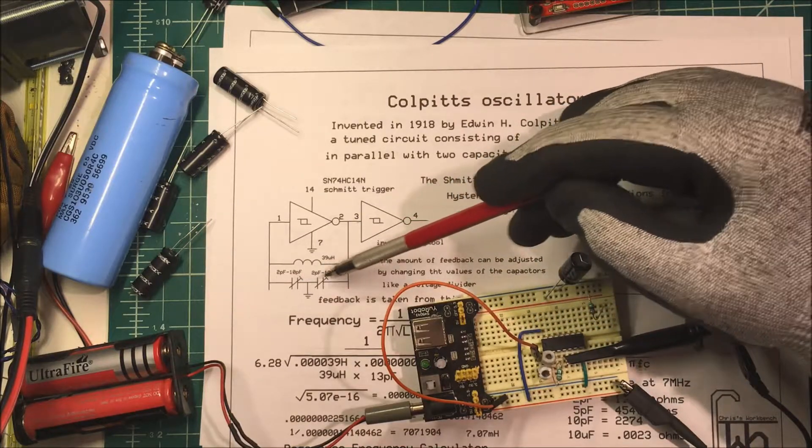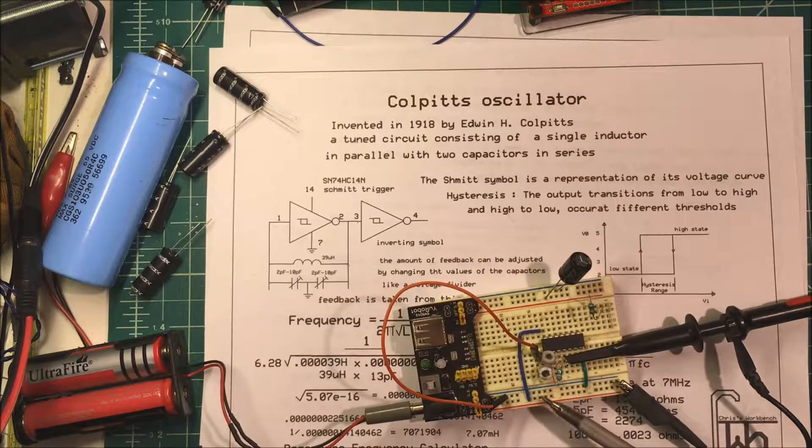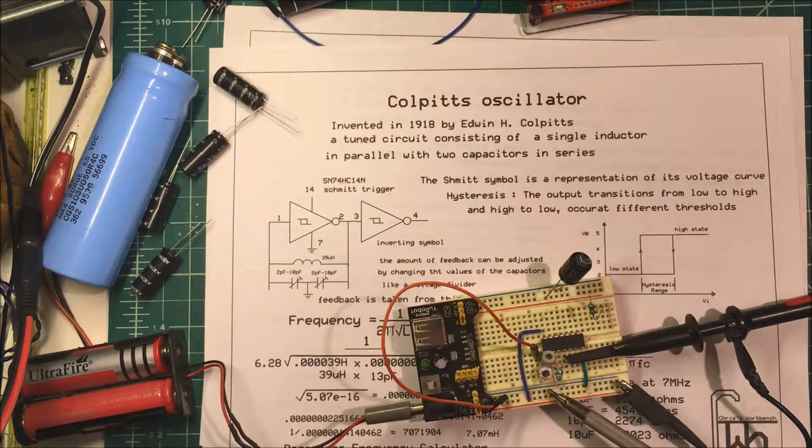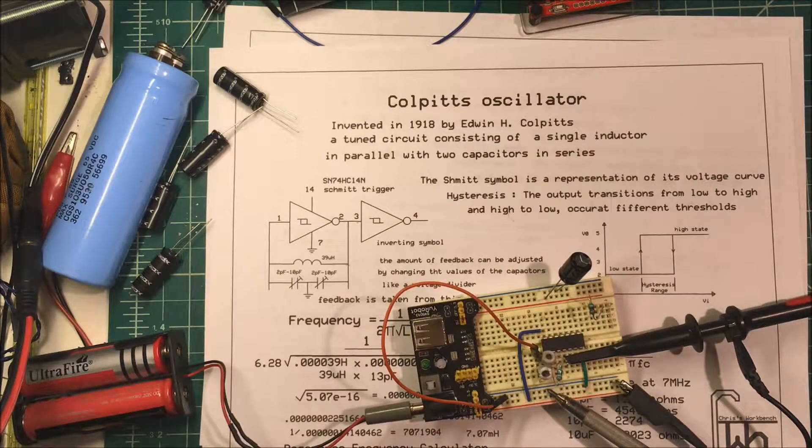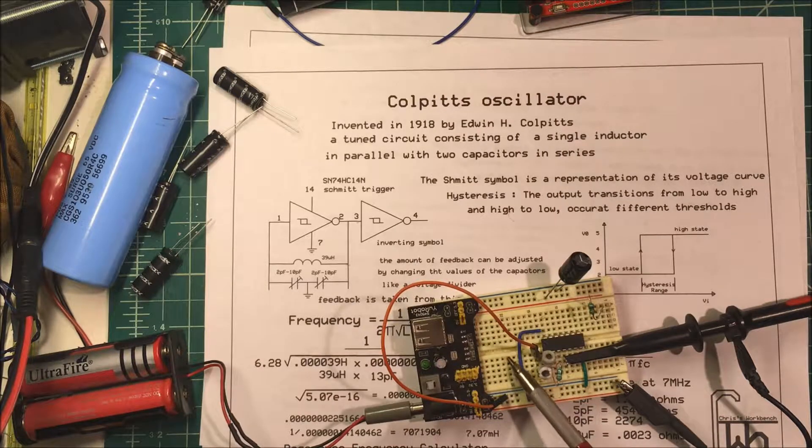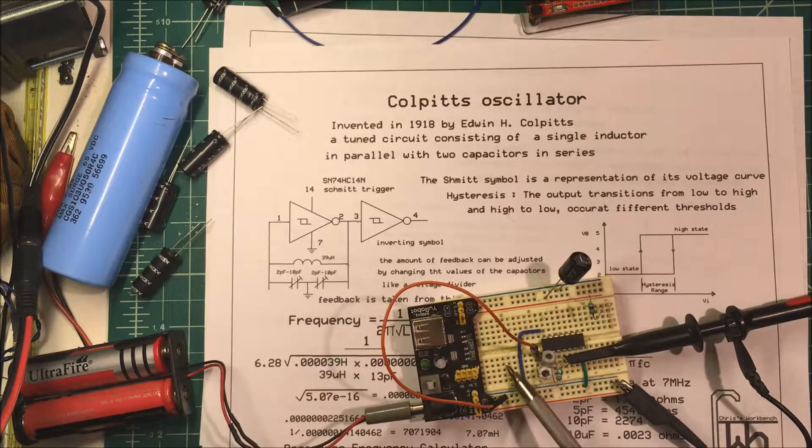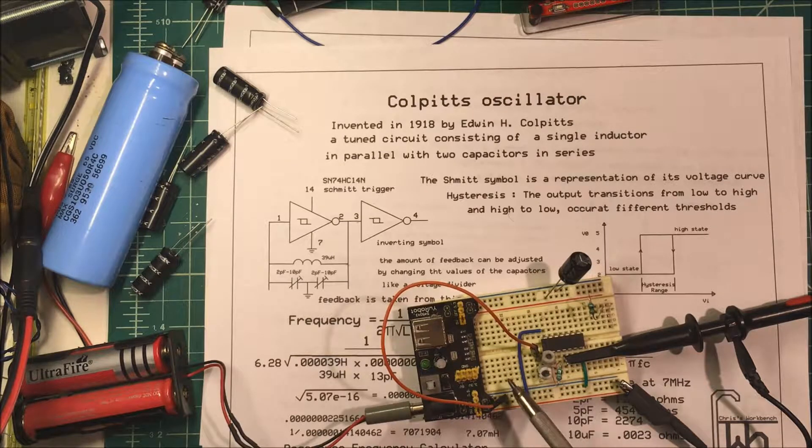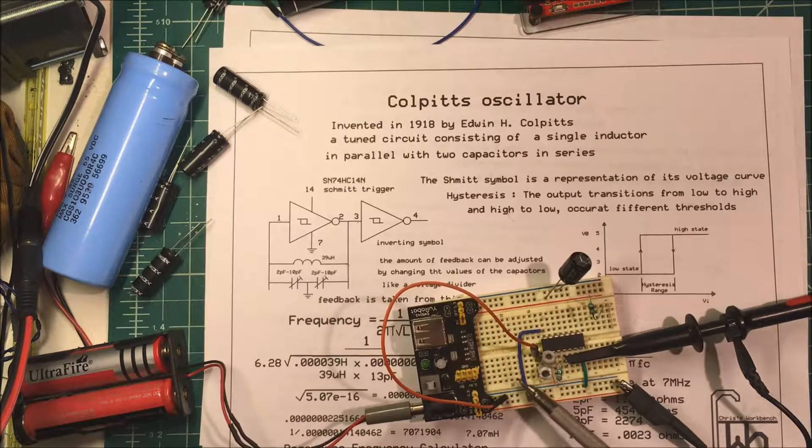So why is this thing even working? Now we're using this breadboard. These breadboards shouldn't be used above one megahertz and what happens here is that there's metal strips in here and they're separated by an insulator and they form capacitors.